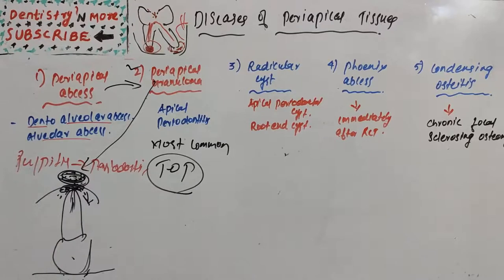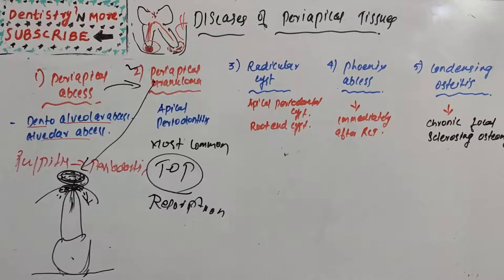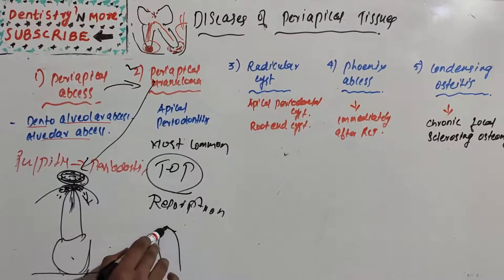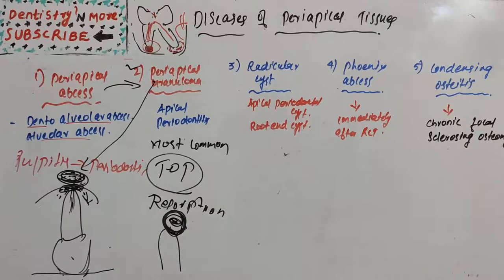Radiographic features: this is the earliest evidence of periapical tissue disease. There will be thickening of the periodontal ligament at the root apex, proliferation of granulation tissue, and resorption of bone. It appears as a radiolucent area of variable size, attached to the root apex, and in some cases it will be well circumscribed with very clear borders.